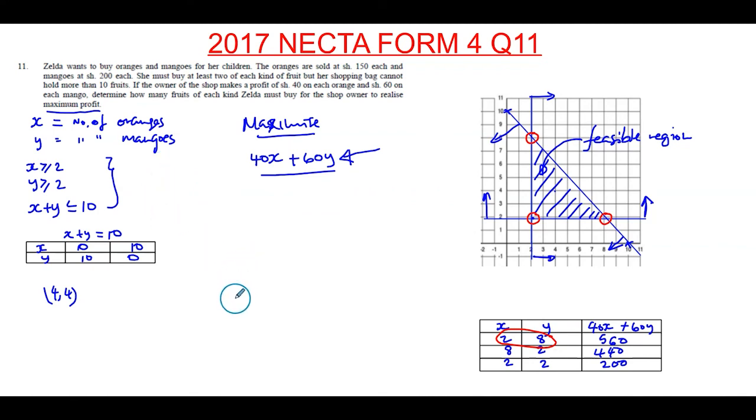So in order to get maximum profit, so for maximum profit, the shopkeeper needs to sell 2 oranges and 8 mangoes.